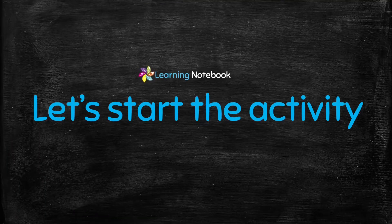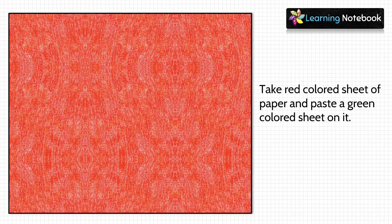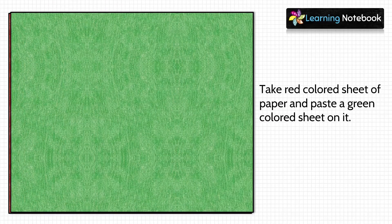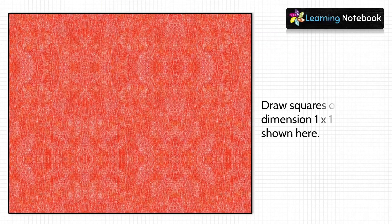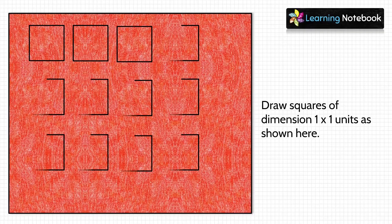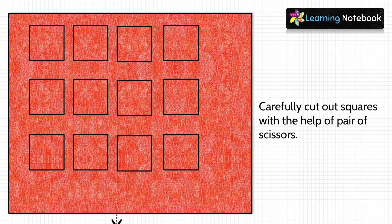Now let's start with the activity. In the first step, take a red colored sheet and paste a green colored sheet on it. On this, draw squares of dimension 1×1 units as shown here. Then carefully cut out these squares using a pair of scissors.